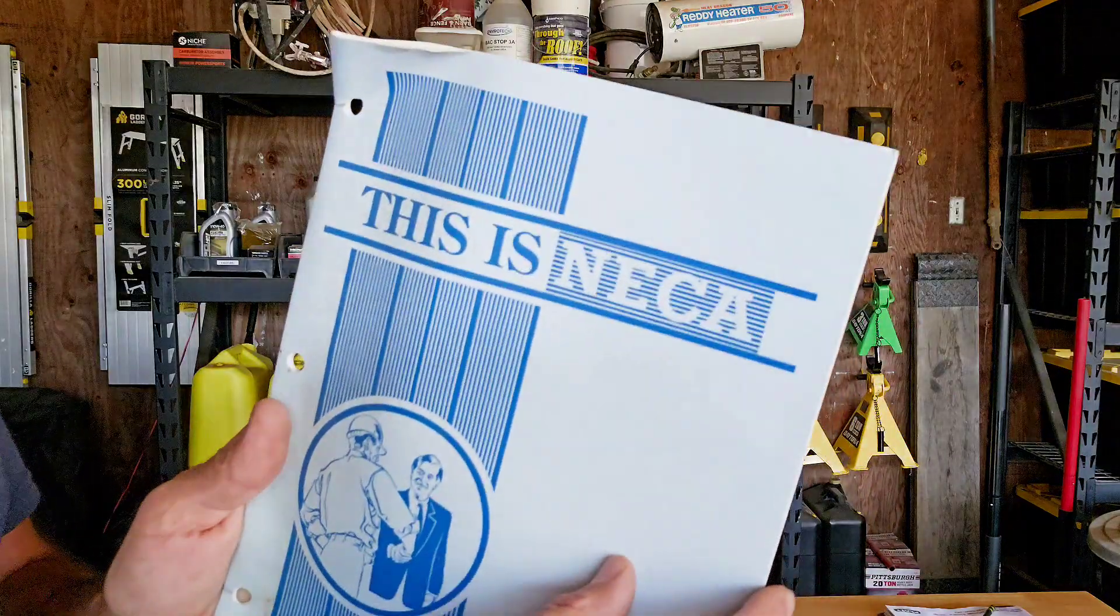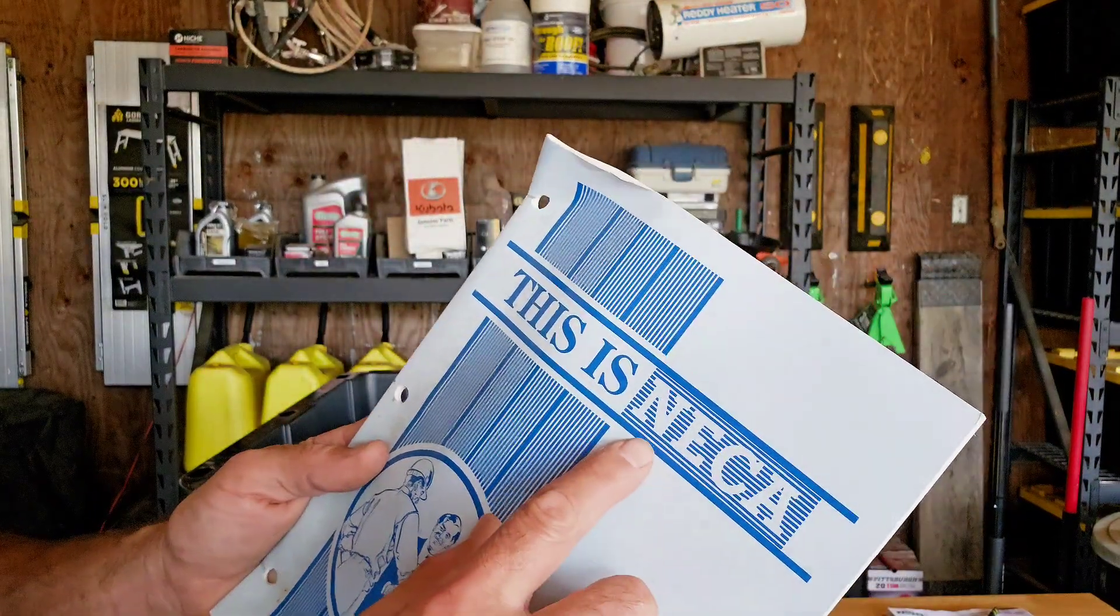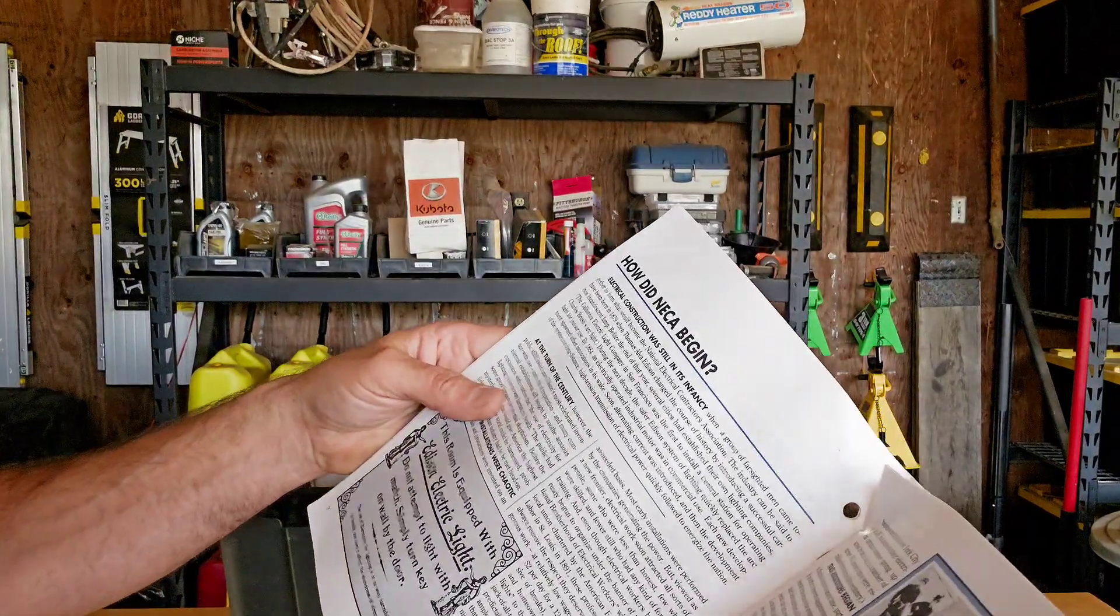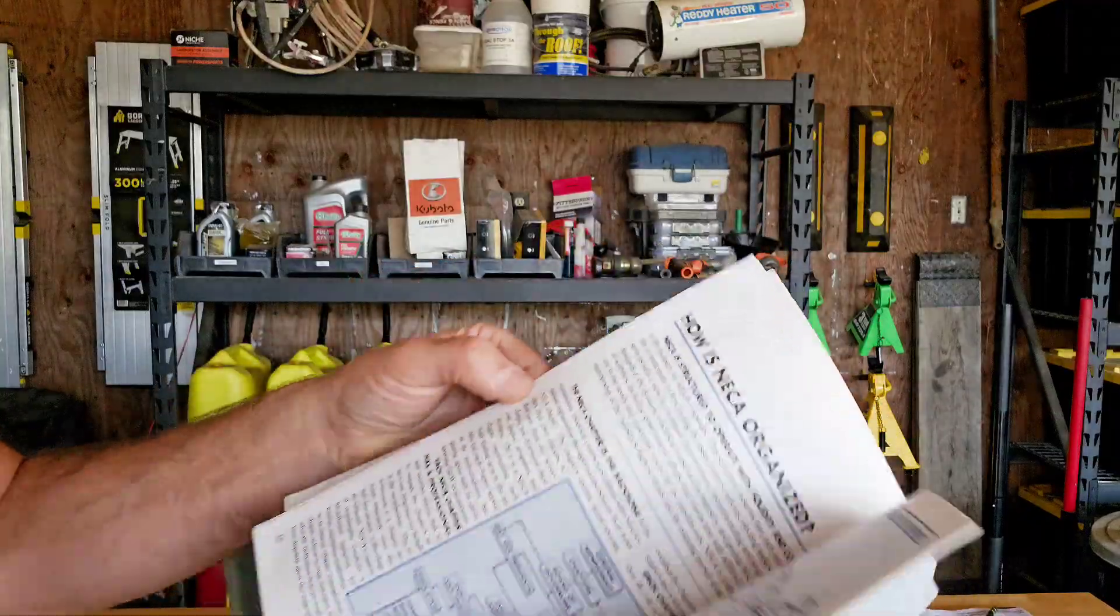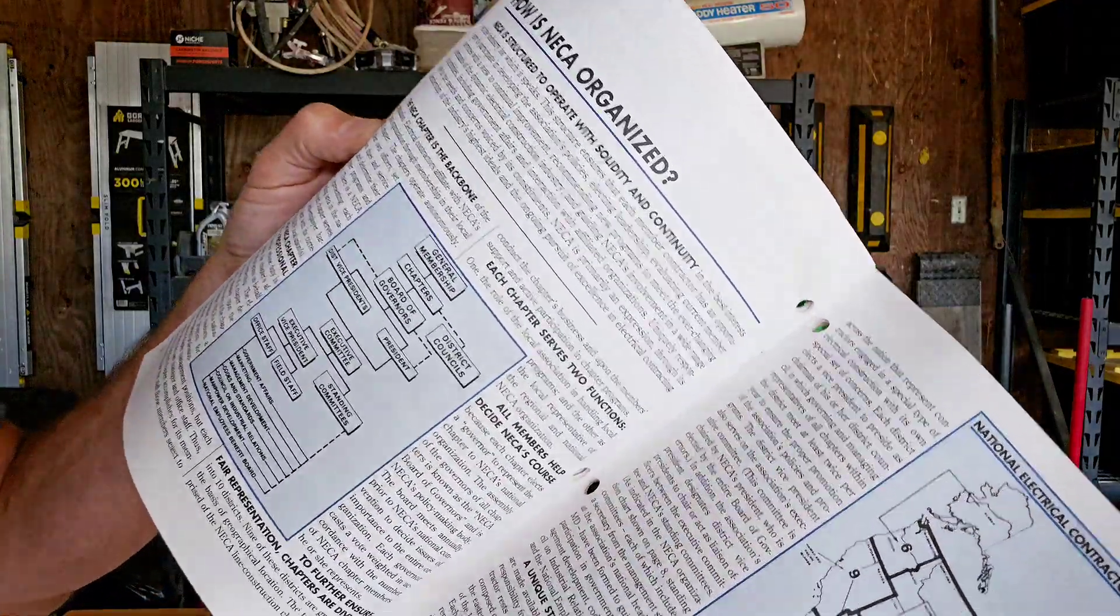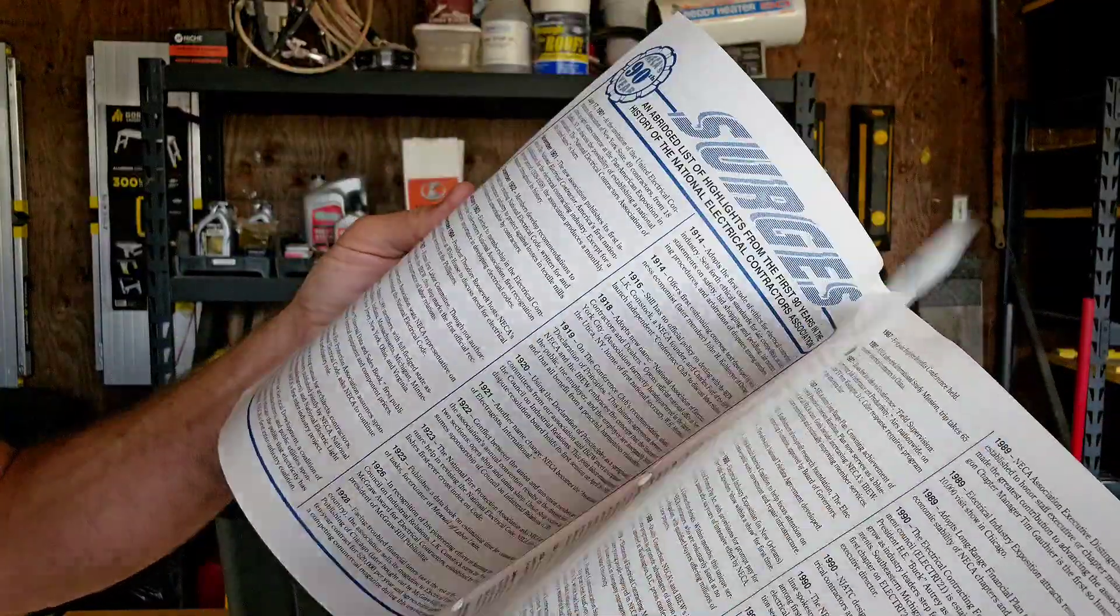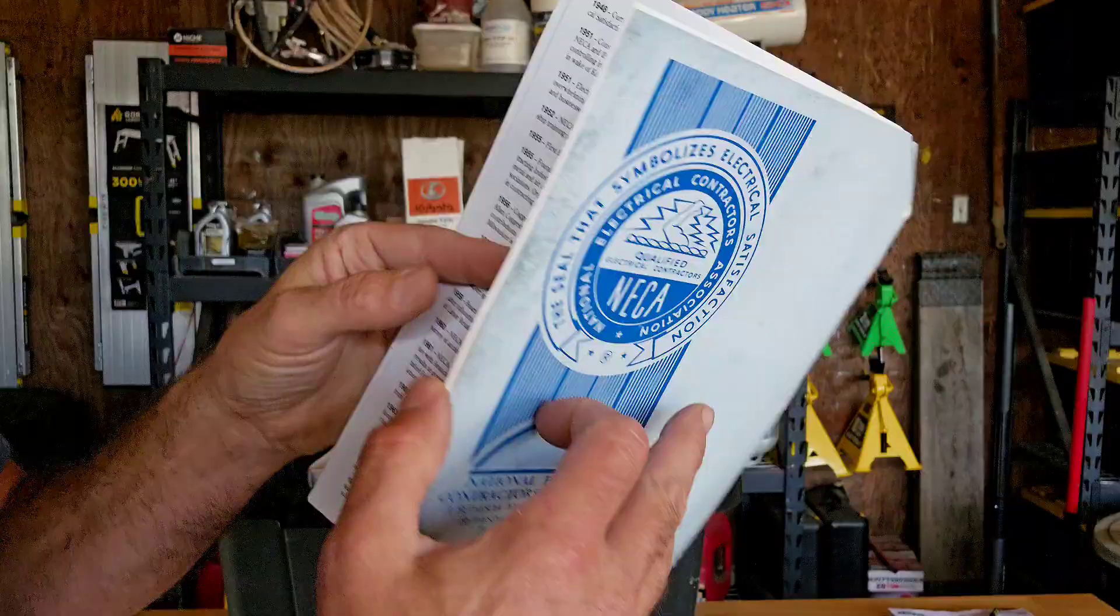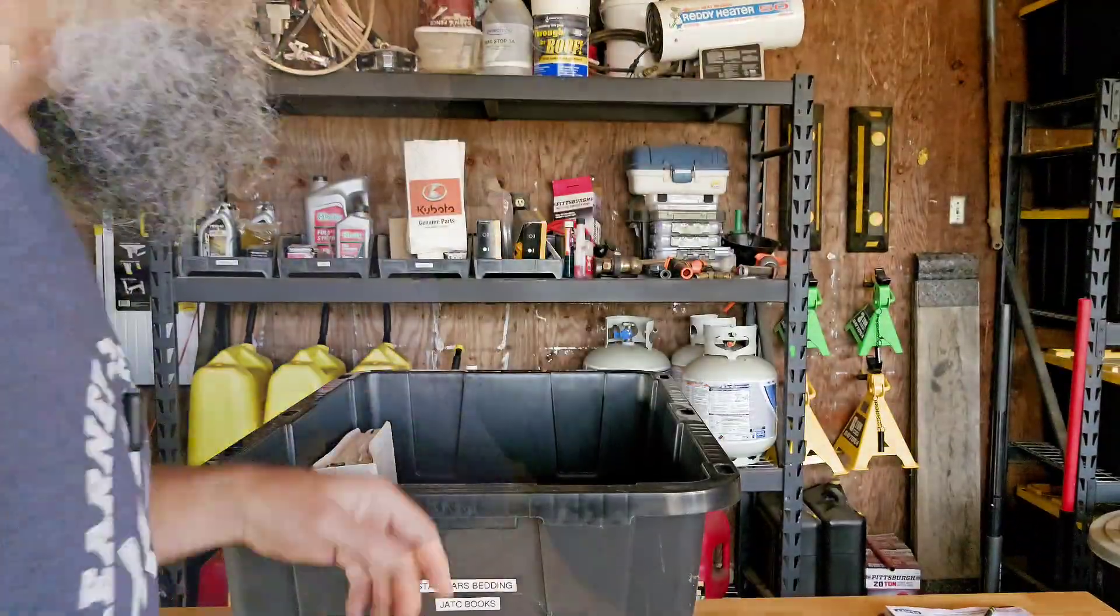And NECA, the counterpart to the IBEW. This would be the National Electrical Contractors Association. It probably talks about how wonderful they are as far as the contractors, how it's organized. I was going to say indoctrinated - let's use a better word than that. It's just more for knowledge and information.